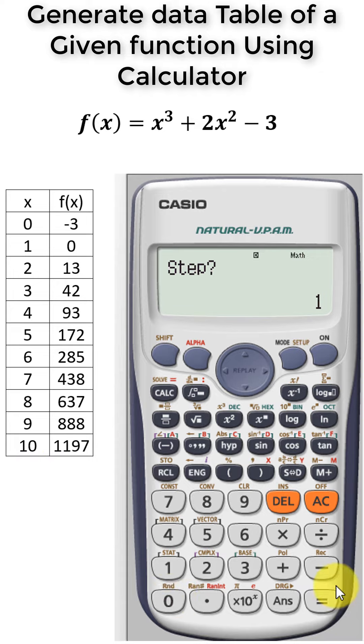End is 10 and we want to have the data for each and every step from zero, one, two, three, so for one step. So step value is one, equal, and now we have generated all the data tables.